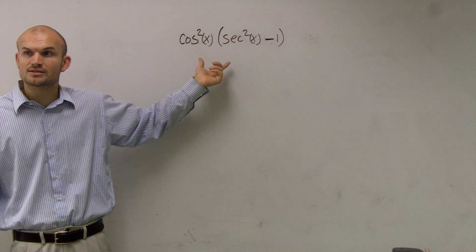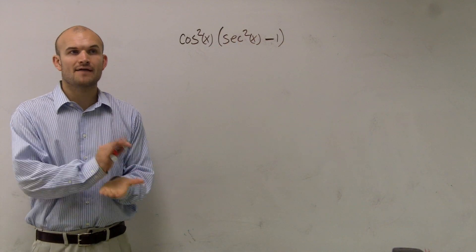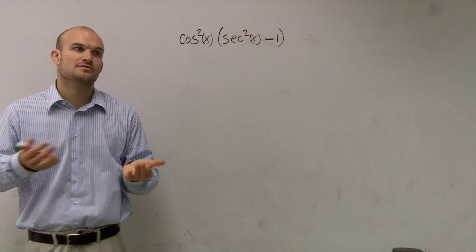So if I was going to first start this problem, rather than changing cosine squared to something else, I'm going to work on changing the secant squared. Because remember, when I have things in sine and cosine, it's easy for me to cancel things out.